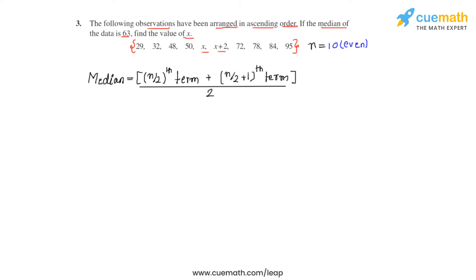As we know the value of n, which is 10, let's start substituting. We write the term that we get by dividing 10 by 2 plus the term that we get by dividing 10 by 2 and adding 1 to it and dividing the whole sum by 2.